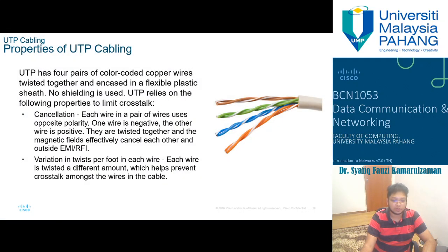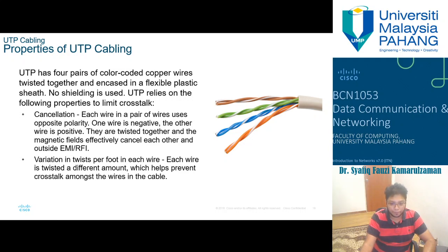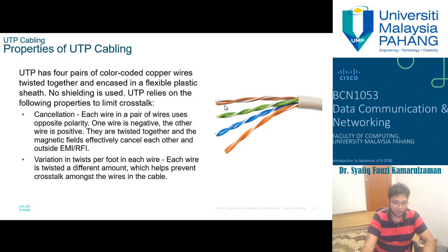When creating UTP cabling, there are four types of wires: brown/brown-stripe, green/green-stripe, blue/blue-stripe, and orange/orange-stripe. They are created in pairs and twisted together. This twisting provides cancellation of EMI and RFI signals — the wires use opposite polarities, one negative and one positive, so each pair's magnetic fields effectively cancel each other and outside EMI is eliminated. The variation in twists per foot in each wire also helps prevent crosstalk between wires in the cable.